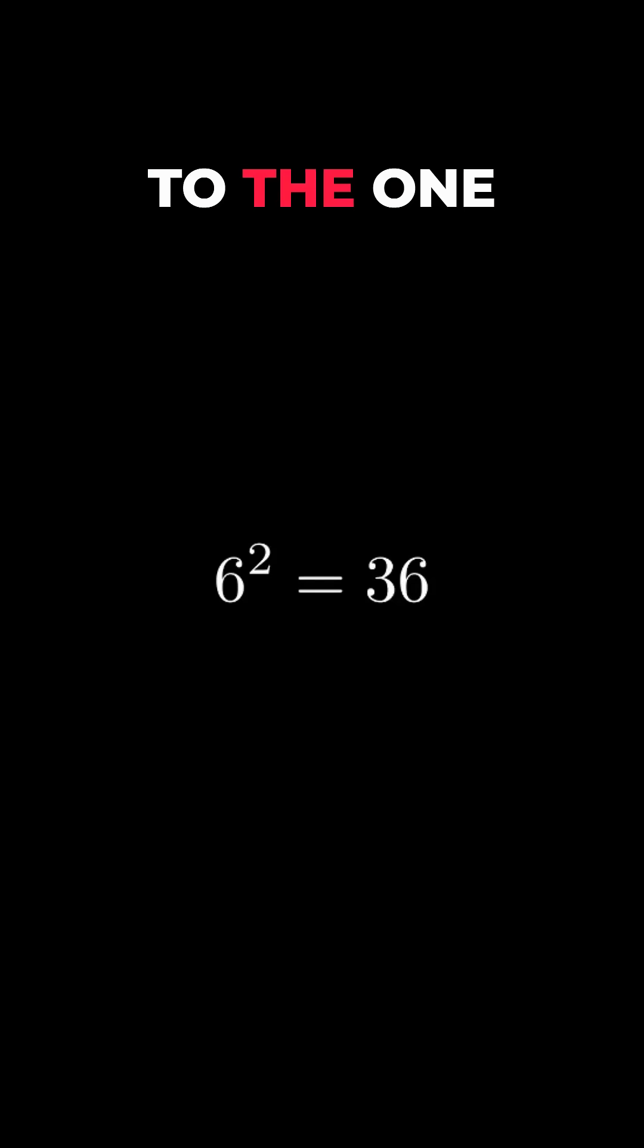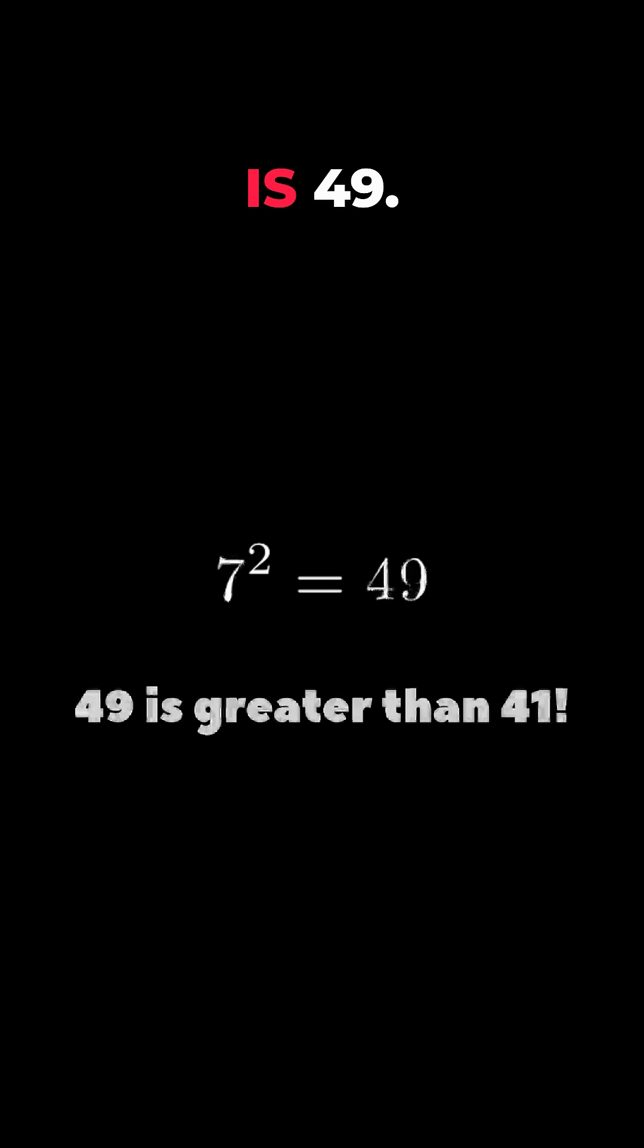What you need to do is find the number that, if squared, gives the closest number to the one under the root. In our case, this number is 6, because 6 squared is 36 and 7 squared is 49.